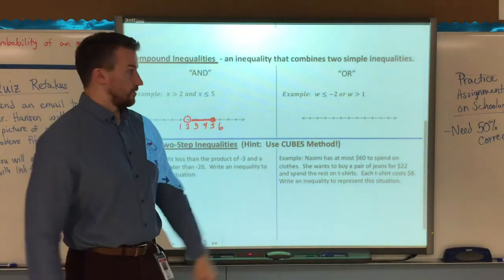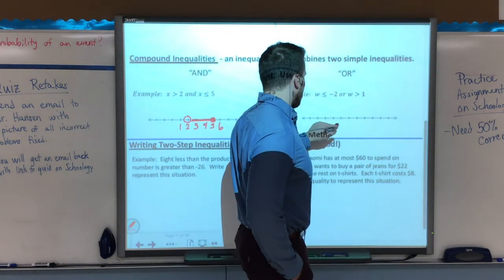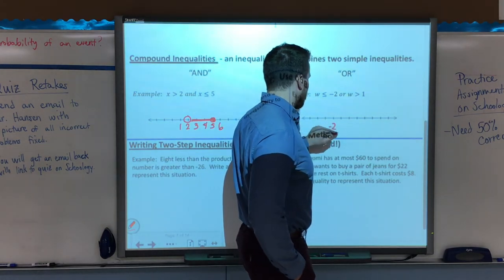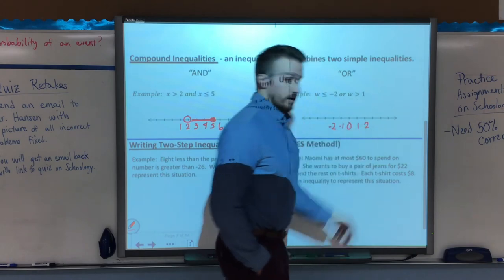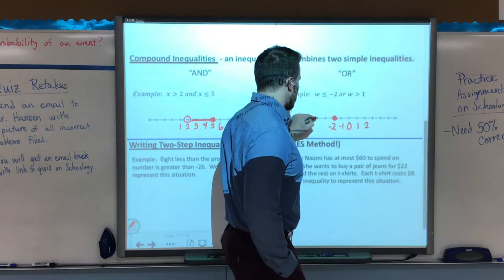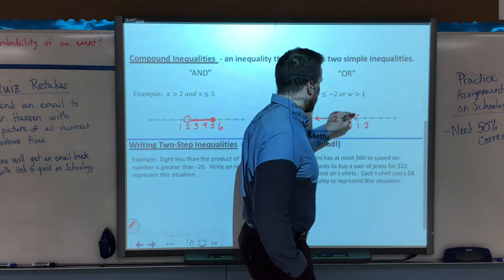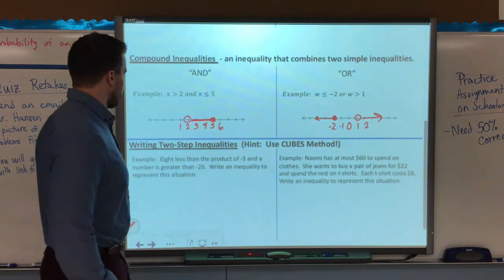Or means it goes opposite directions. So, if I have w is less than or equal to negative 2, which we do have negatives on the number line, or w is greater than 1, again it's closed circle at negative 2, goes to the left, open circle at 1, and it goes to the right.